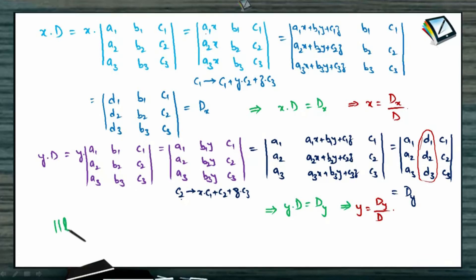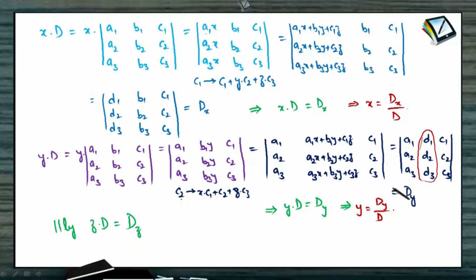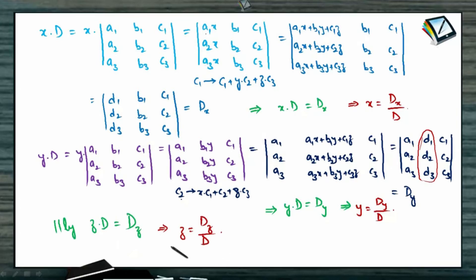Similarly, z times D gives a determinant obtained by replacing the coefficients of z by d1, d2, d3. From here we get the value of z as that determinant divided by the original determinant D.